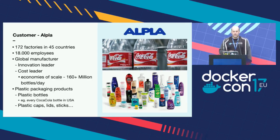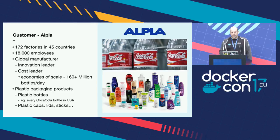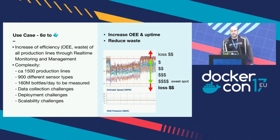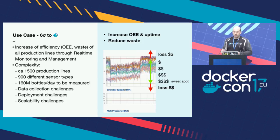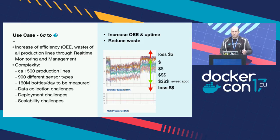They produce up to 160 million bottles each day, and they've maxed out essentially everything. They also produce other plastic packaging products — you see a lot of them, and some of them you might even use. They're using Six Sigma, lean production, their machines are highly optimized. The overall equipment efficiency is really high, and so is the uptime.